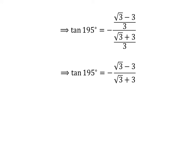1 upon 3 is the common factor in the numerator and the denominator. Thus, cancelling out the common factor 1 upon 3 gives us tangent of 195 degrees is equal to minus square root of 3 minus 3, upon square root of 3 plus 3.